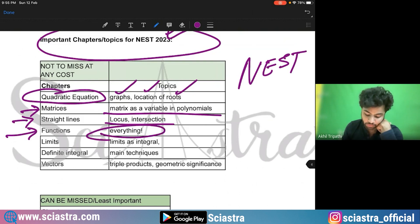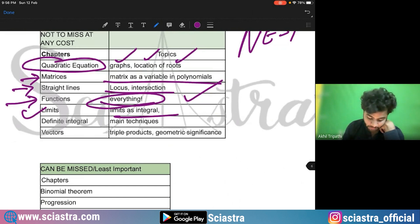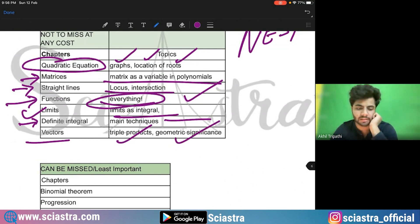For functions, everything of the function is important. For limits, limits as integral, then definite integral, main techniques of solving definite integral vectors, again, triple product and geometric significance of vectors.